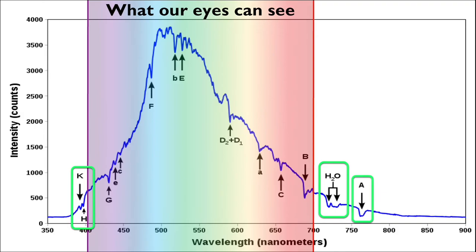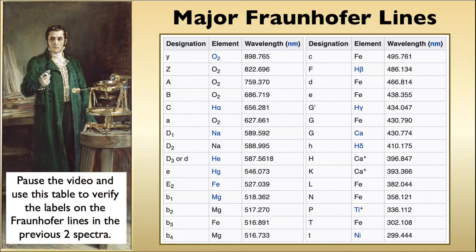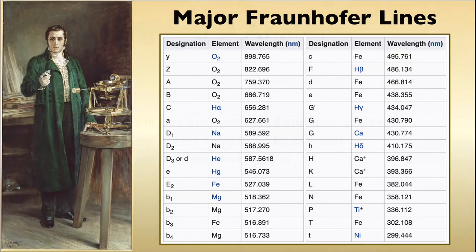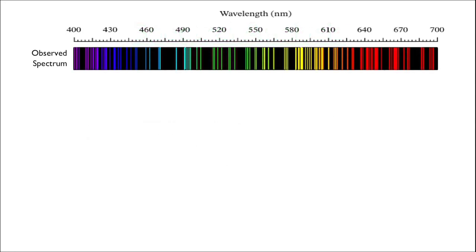It is from this table that we can identify these major Fraunhofer lines and the elements that cause them in the spectra of the stars that we have observed. It should hopefully come as no surprise that we can say that the number of spectral lines produced and their respective colors are unique to the element or the compounds that produce them.